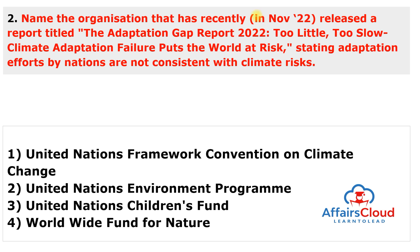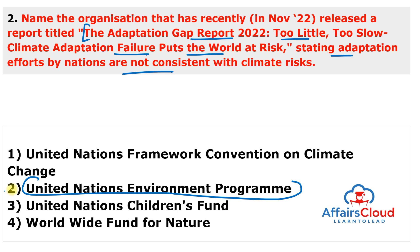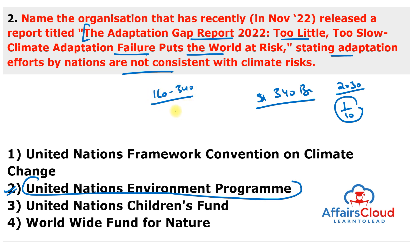Next question: The organization that released the Adaptation Gap Report 2022, titled 'Too Little, Too Slow: Climate Adaptation Failure Puts the World at Risk,' stating that adaptation efforts by nations are not consistent with climate risk, is the United Nations Environment Programme (UNEP). Adaptation needs require almost $340 billion per year by 2030, but currently stand at less than one-tenth of that amount. Estimated annual adaptation needs are $160–$340 billion by 2030 and $315–$565 billion by 2050.